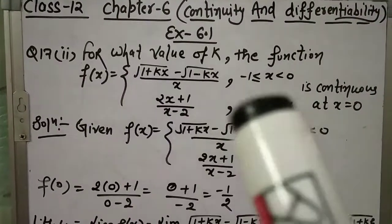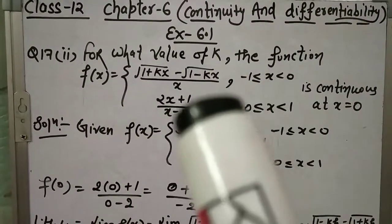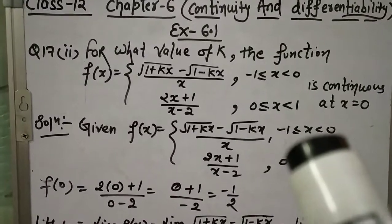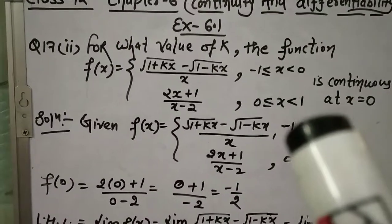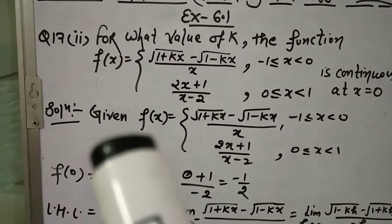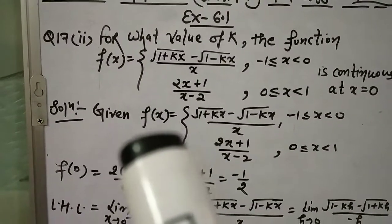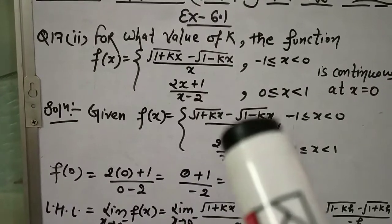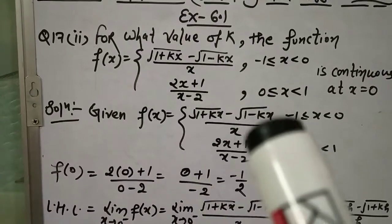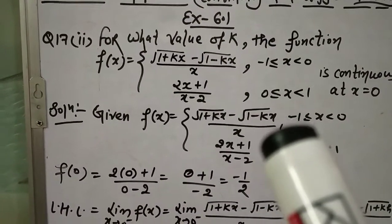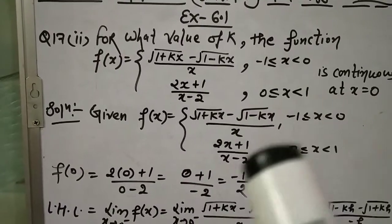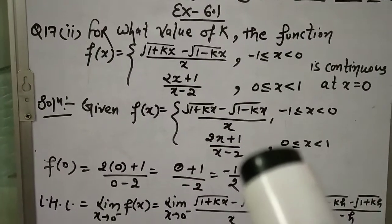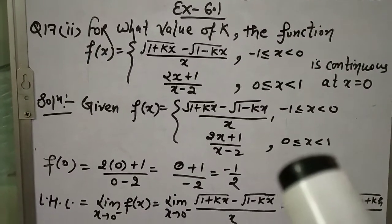हमें k की वो value निकालनी है जिसके लिए ये function x = 0 पे continuous हो जाए। Given function f(x): √(1+kx) minus √(1-kx) divided by x, for x ≥ -1 and x < 0; and (2x+1)/(x-2) for x ≥ 0 and x < 1.